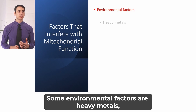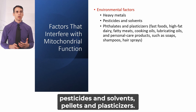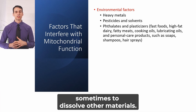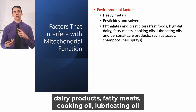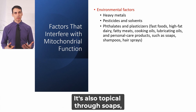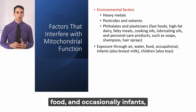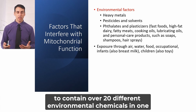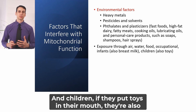Environmental factors include heavy metals, pesticides, solvents, phthalates, and plasticizers — which are used to make plastic more flexible and durable. These are found in fast food, high-fat dairy products, fatty meats, cooking oil, lubricating oil, and personal care products. Exposure occurs topically through soaps, shampoos, and hair sprays, as well as through air, water, food, and breast milk. One study found that mother's breast milk contained over 20 different environmental chemicals. Children can also be exposed by putting toys in their mouths.